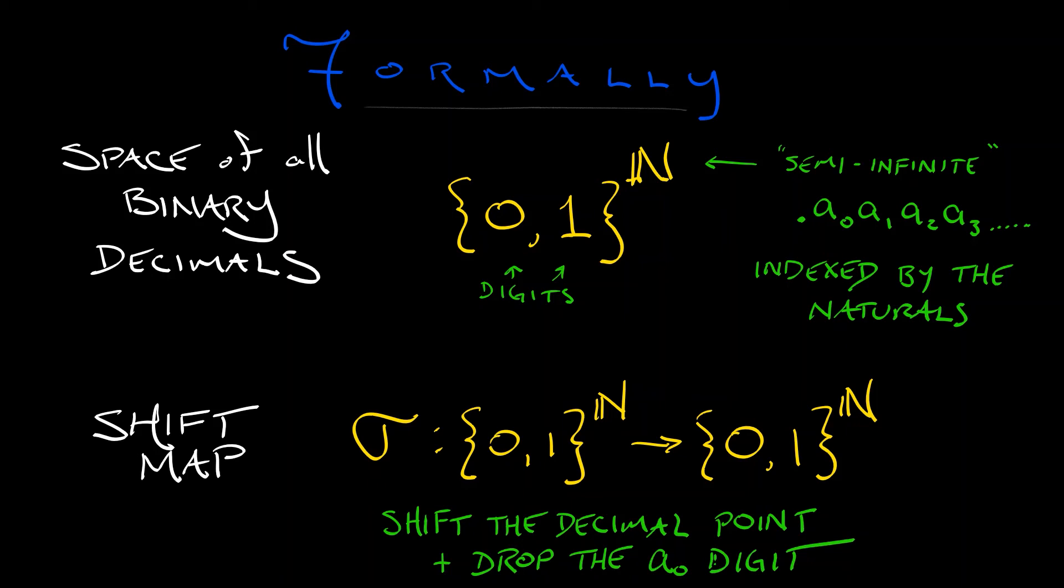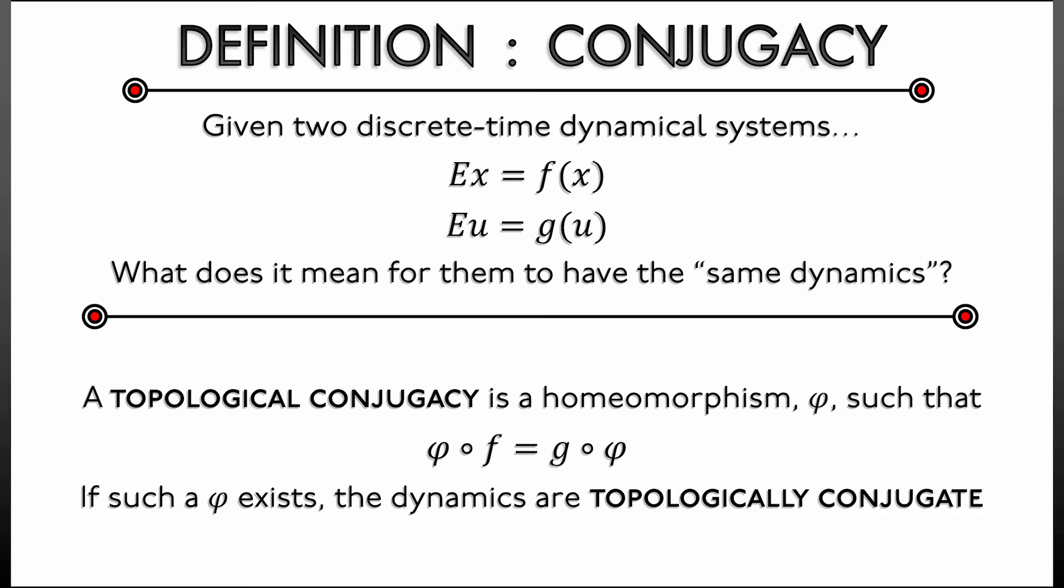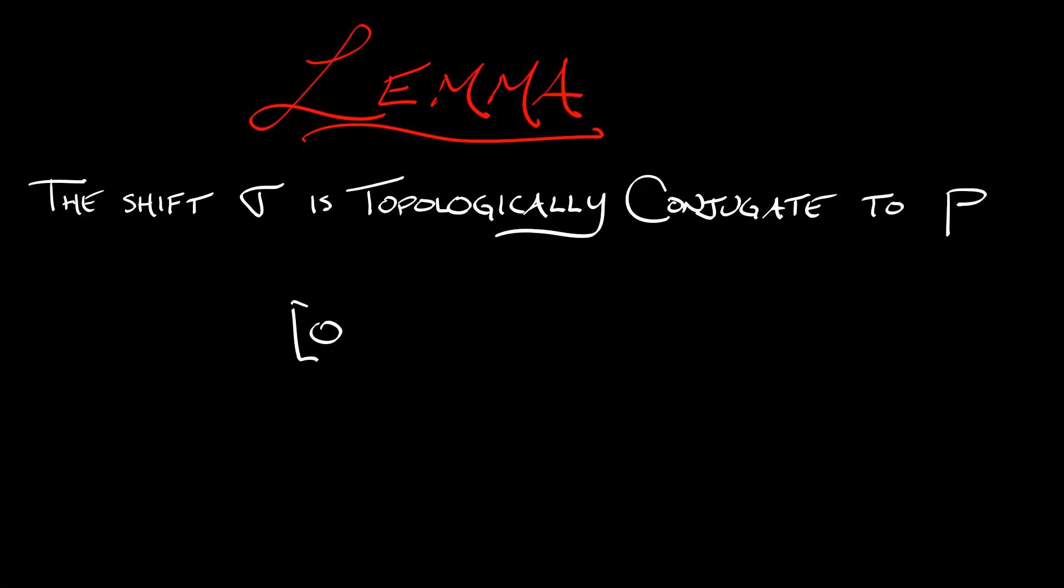Now this seems all kind of formal, and it is kind of formal, but we're going to put it to good use. Our goal is to state the following lemma: the shift map σ on this space of binary decimals is topologically conjugate to our Poincaré return map p. What do I mean by that? You may have to go back and review topological conjugacy a little bit from a long time ago.